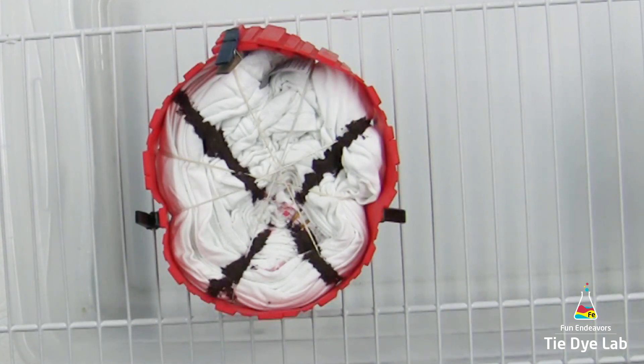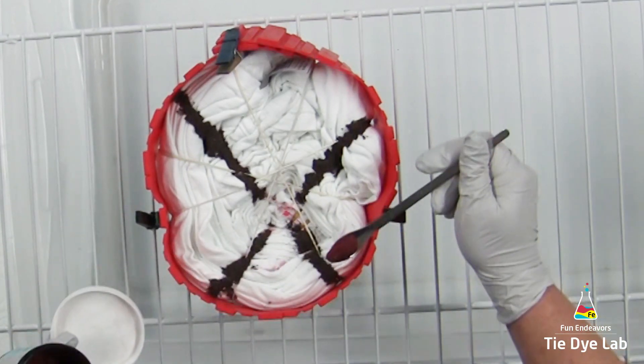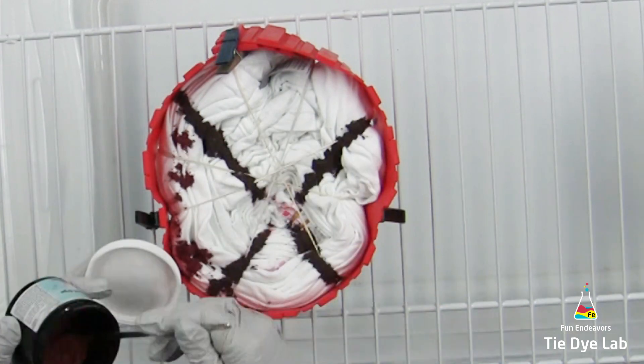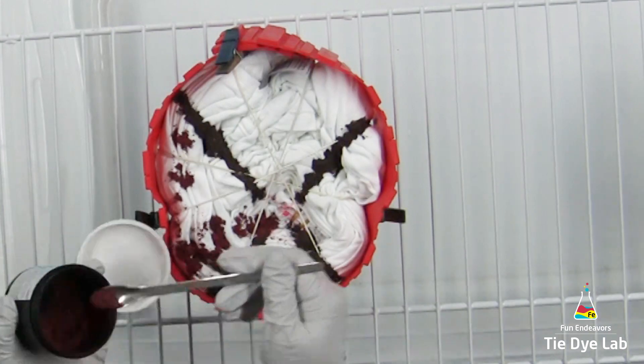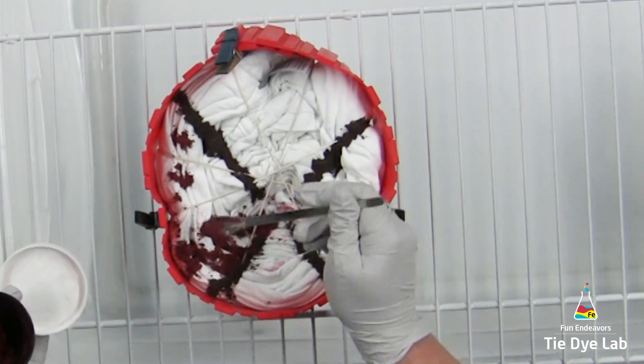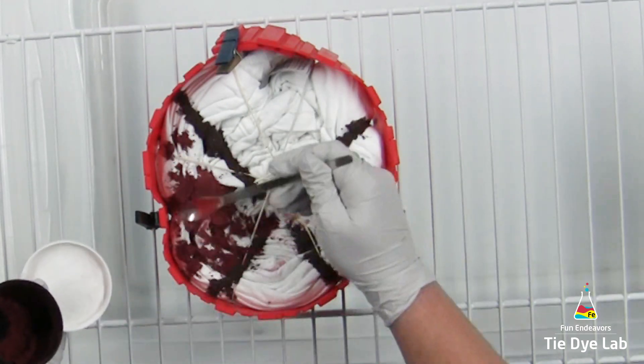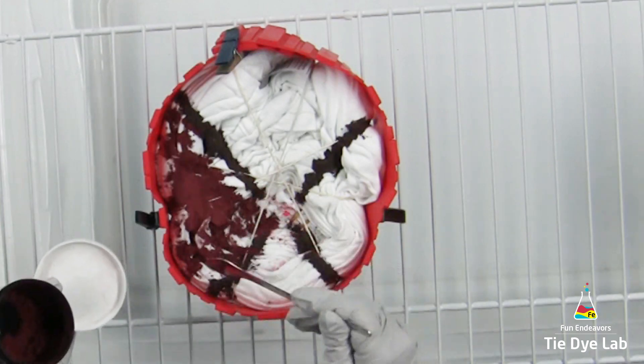A helpful tip whenever you're dyeing a spiral shirt is right in the middle of the spiral where all of the colors meet. If you will go gently with your dye and not add a lot of dye to that area your spiral will be a lot more distinct. If you add too much color into the center of the spiral where all the colors mix it becomes muddy and a little less discernible.